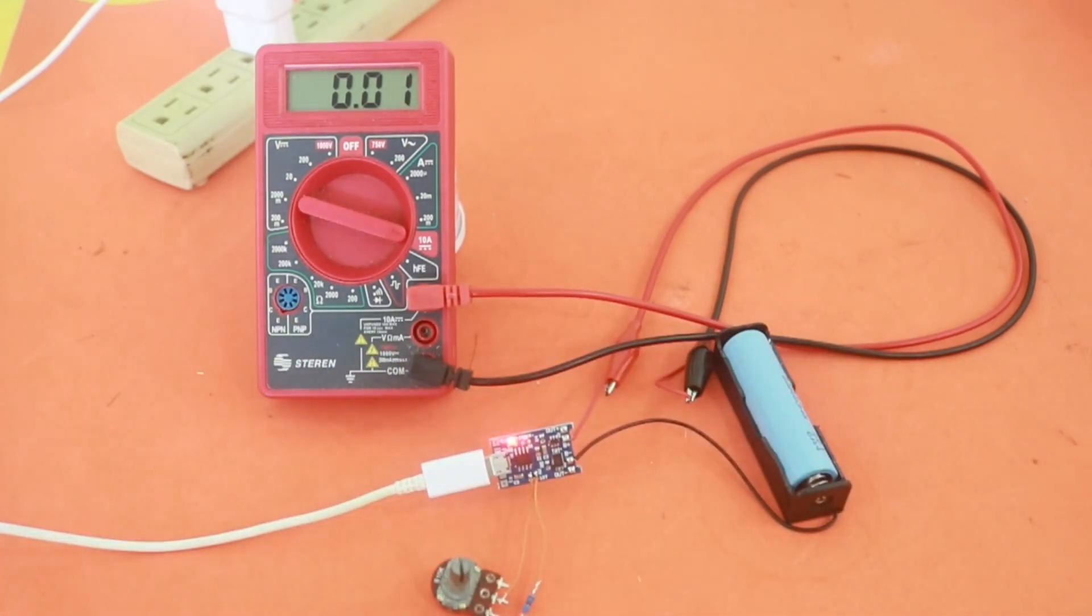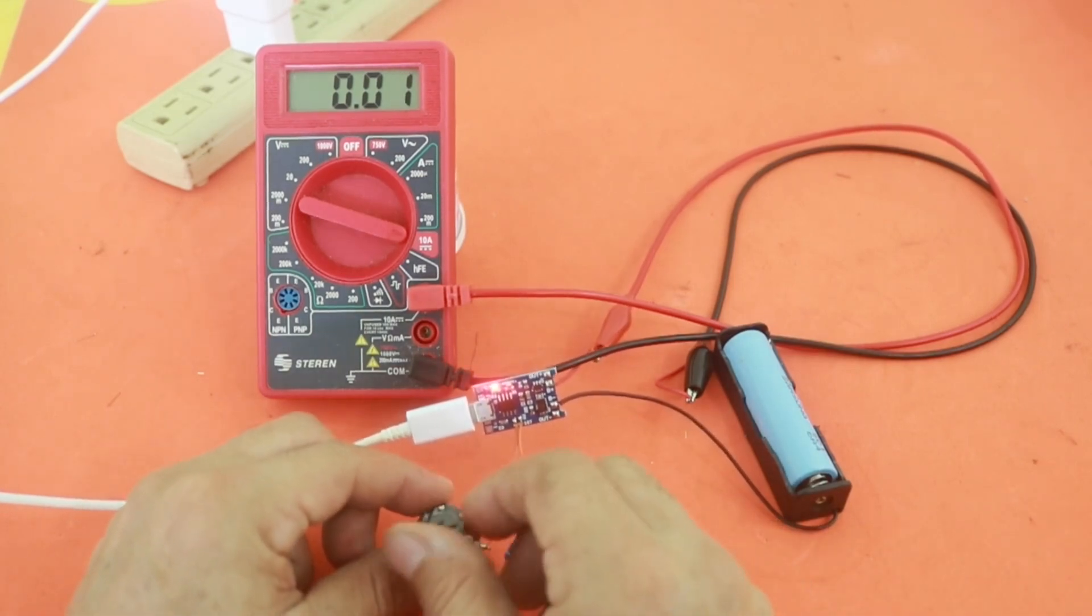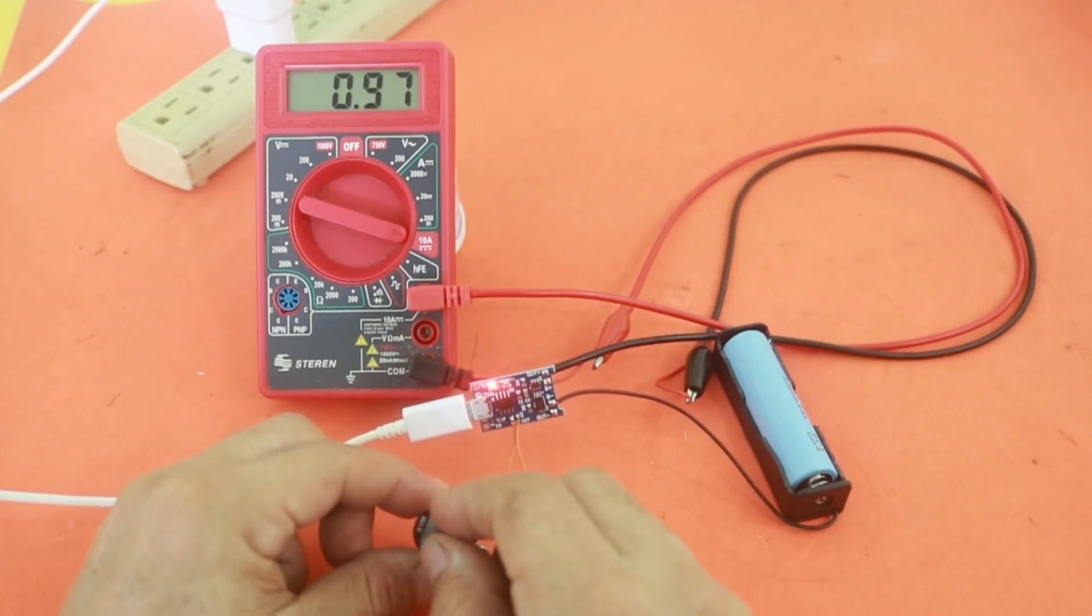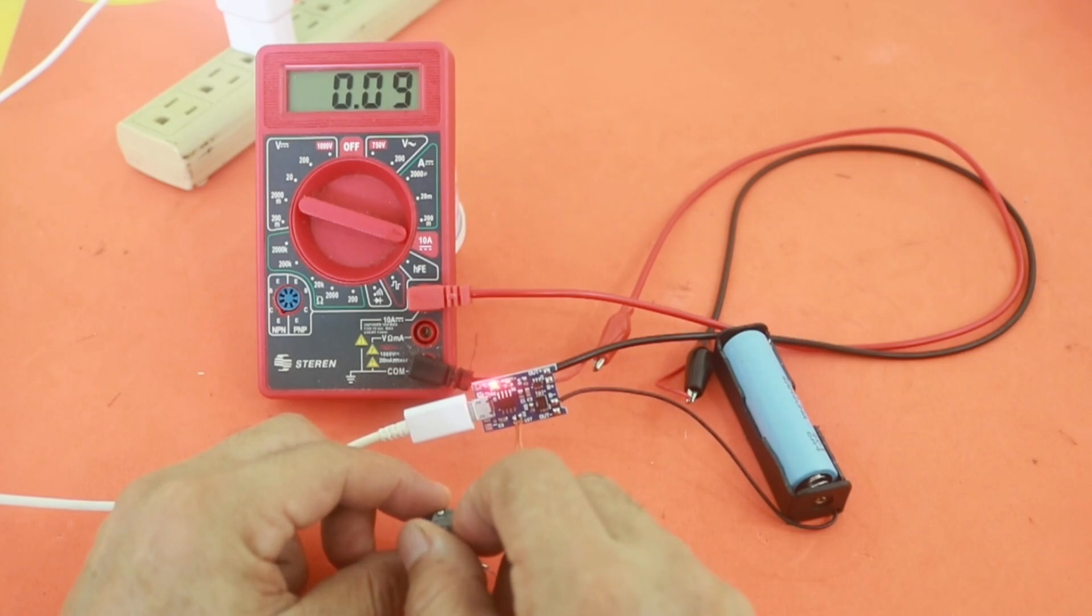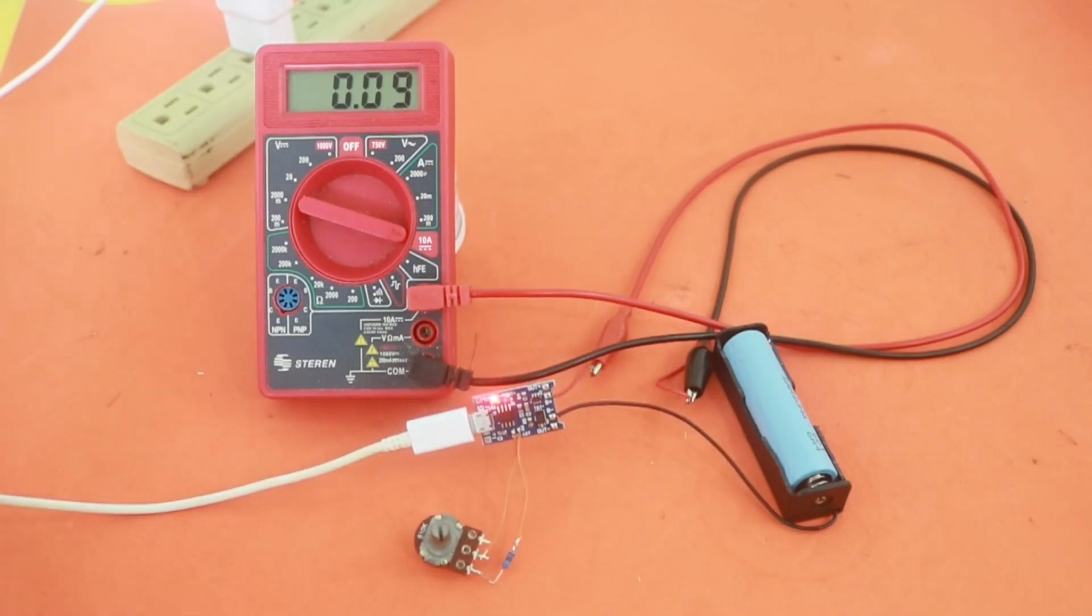Okay, almost 0 amps. And if we turn our potentiometer we can increase the current to around 1 amp which is the default current, and we can set the current that we want.